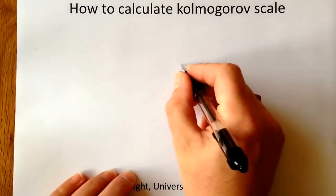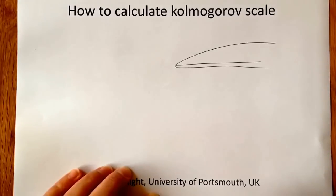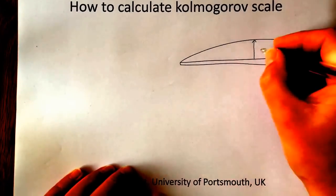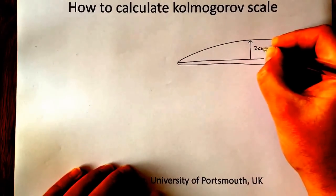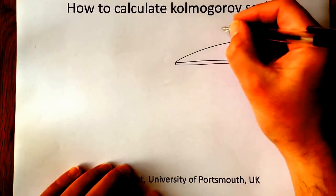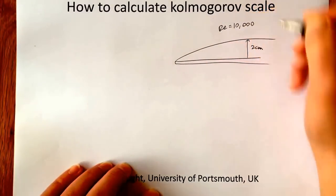Let's say we've got a flat plate with a boundary layer growing on it. At one particular point on the flat plate, we've got the boundary layer thickness of 2cm, and at this particular distance we've got a Reynolds number of 10,000.